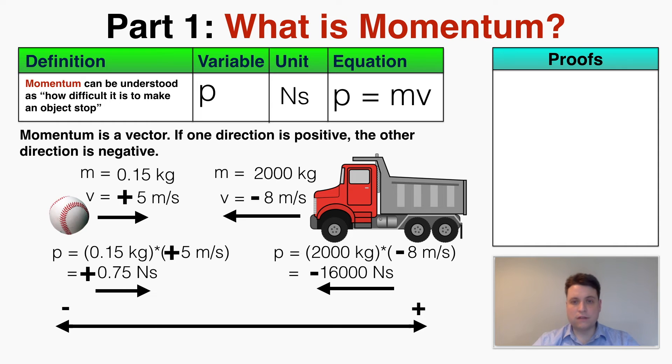So momentum, just like velocity, has a direction, it's a vector. It has a size and a direction, and it's entirely arbitrary which direction I consider to be positive and negative. If I flip the positive and negative, that just means that I have to flip which velocity is positive and negative here, which also flips which momentum is positive and negative.